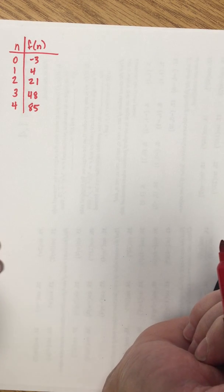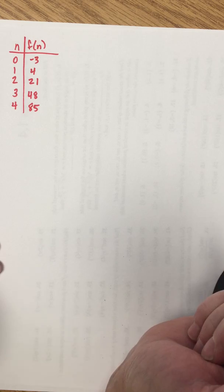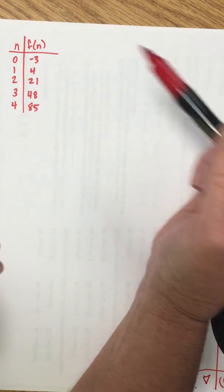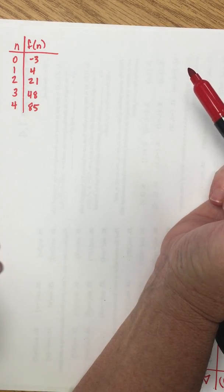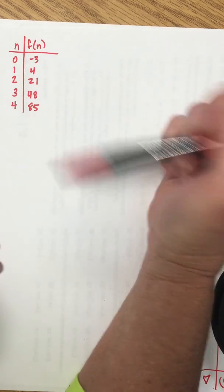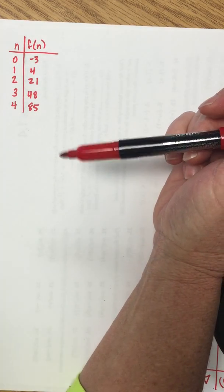We're given a table of data and we want to find the recursive form of the function that will define this table for us. The first thing we notice is that our inputs are increasing by 1 and our outputs are changing.